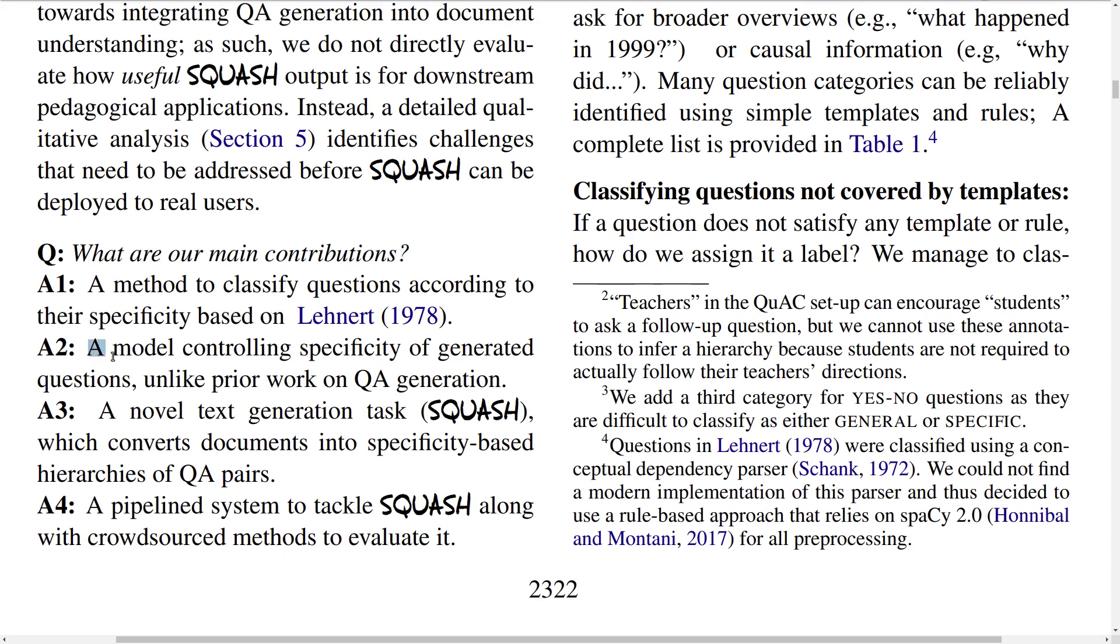They also propose a model that can control the specificity of the generated questions, so they can generate either more specific or more general questions. And they propose this novel text generation task called SQUASH which converts documents into specificity-based hierarchies.